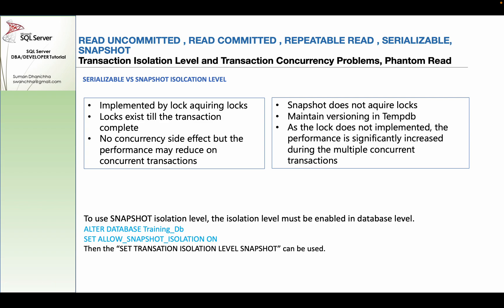So what are the key differences in Serializable versus Snapshot? In Serializable, there is a lock implementation — when the transaction is completed, then you can use the list of records. In the same case, there is a lock, so there is a concurrency side effect, but the performance may reduce for concurrent transactions.